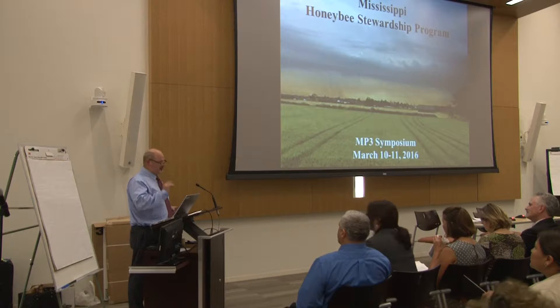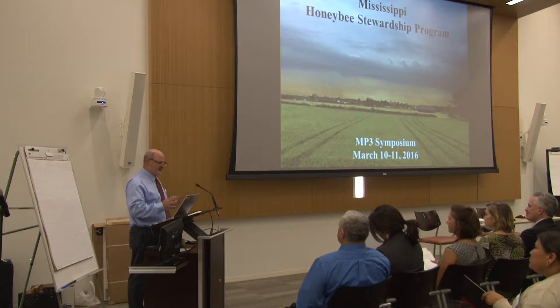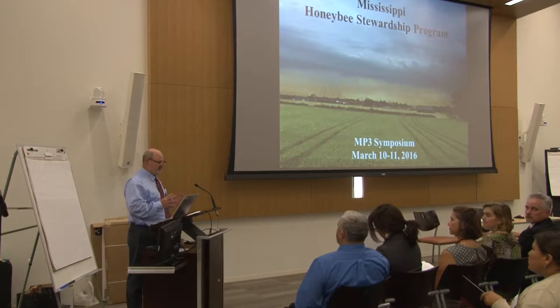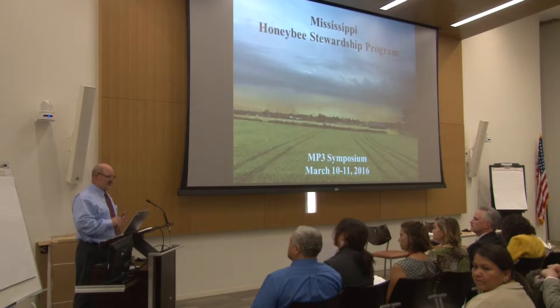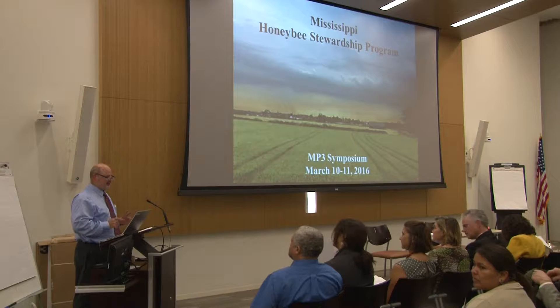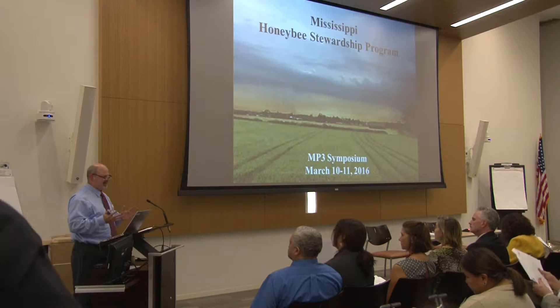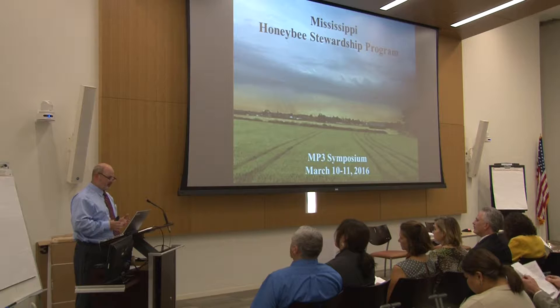I'm going to run through where we started, focusing on how we got started more than what we wound up with. We met with four or five people I knew were going to be key. Don Parker was one — very knowledgeable about this. We met with our state entomologist and our apiculturist and said, 'Okay, we've got to map out a plan.' Our first meeting was with row crop producers by themselves.